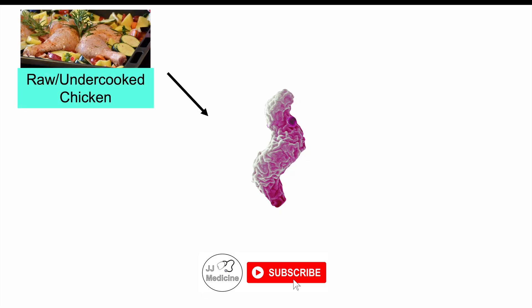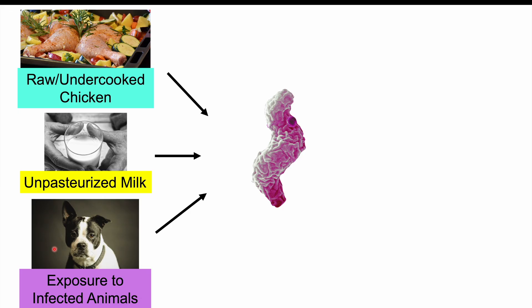Ways that individuals can get infected with Campylobacter include raw or undercooked chicken, which accounts for about 50 to 70% of cases. We can also get it from unpasteurized milk consumption and exposure to infected animals. Important animals that can harbor this bacteria include dogs, cats, and pigs, which may have Campylobacter residing in their gastrointestinal system.